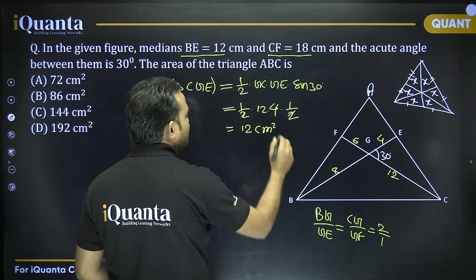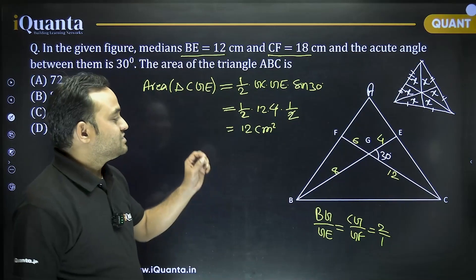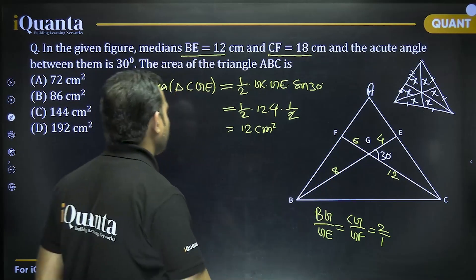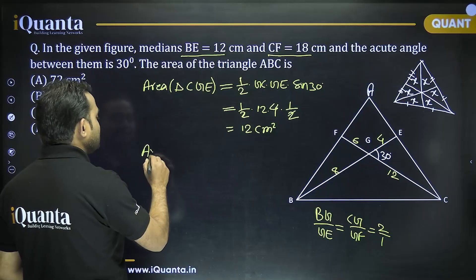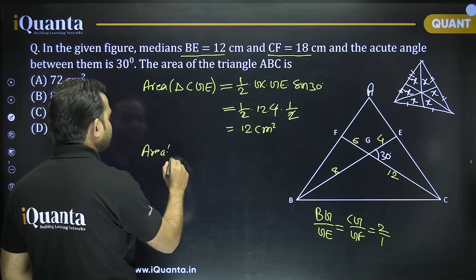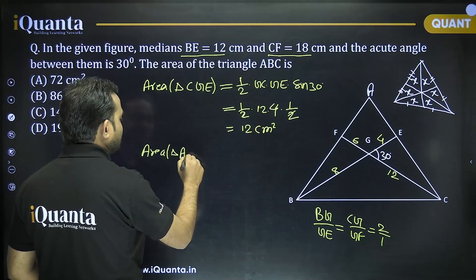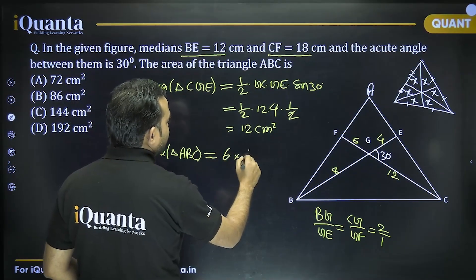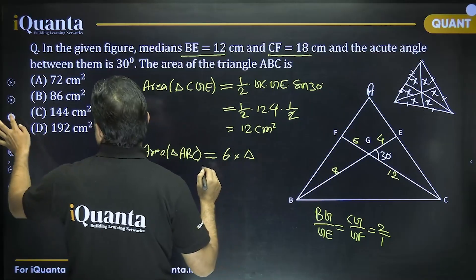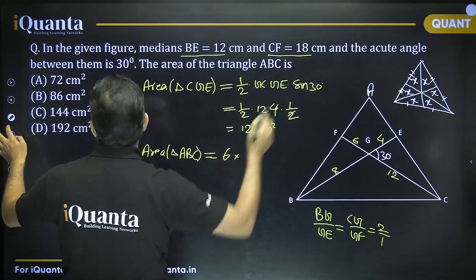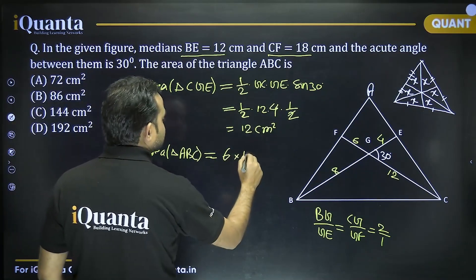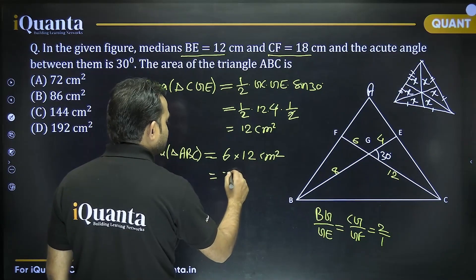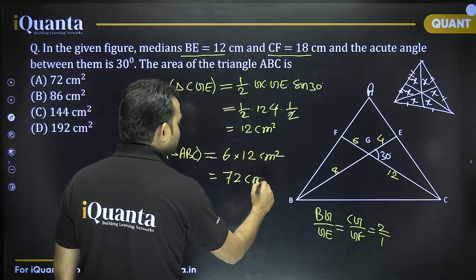So it's ½ × 12 × 4 × (1/2) = 12 cm². Therefore, the area of triangle ABC = 6 × 12 = 72 cm², which is option A.